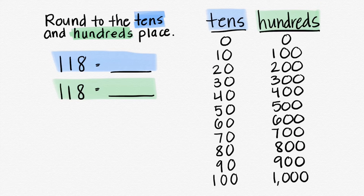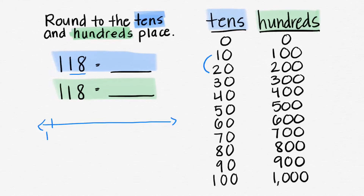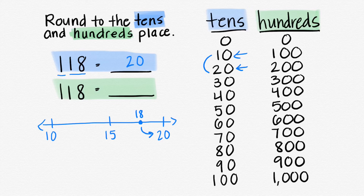Let's round 118 to the tens place. We're only going to look at the tens and on, so 18 falls between 10 and 20. We have 10 on one side, 20 on the other, and halfway is 15. 18 is after the 15. Is 18 closer to 10 or closer to 20? It's closer to 20, so we can write 20. But it's not just 20 — it's 120.